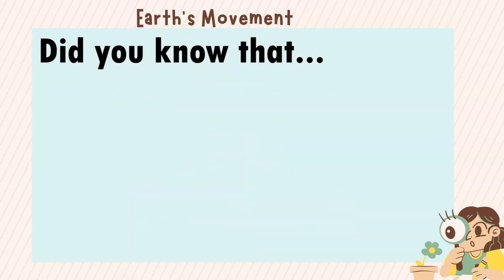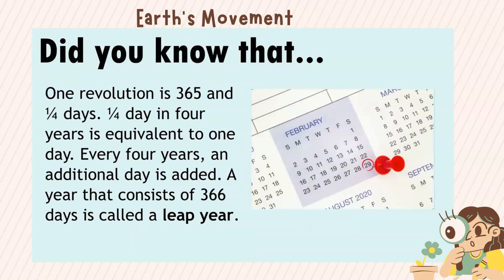Did you know that one revolution is 365 and one-fourth days? One-fourth day accumulated over four years is equivalent to one day. Every four years, an additional day is added. A year that consists of 366 days is called a leap year.